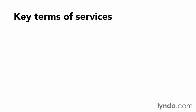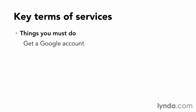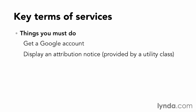Here are some of the key terms that everyone should know about. In order to use the API, you must have a Google account. Once you have that account, you'll get something called an API key that you plug into your application. Your application must also display an attribution notice — a screen that describes what the Google services are and how they're supposed to be used. The actual text of this screen is provided by Google, and you'll get it by using a utility class that's part of the API.